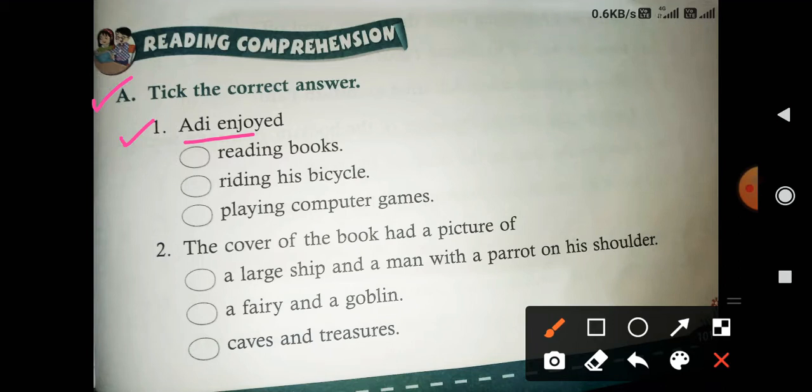To us mein se aap kya karenge, jo right option hai waha par us ko aap kya karenge, tick karenge. Tick karenge, tick. Tick the correct answer, okay. Jo correct answer hai us par kya karenge, tick. What did he enjoy? Playing computer games. Okay, playing computer games.